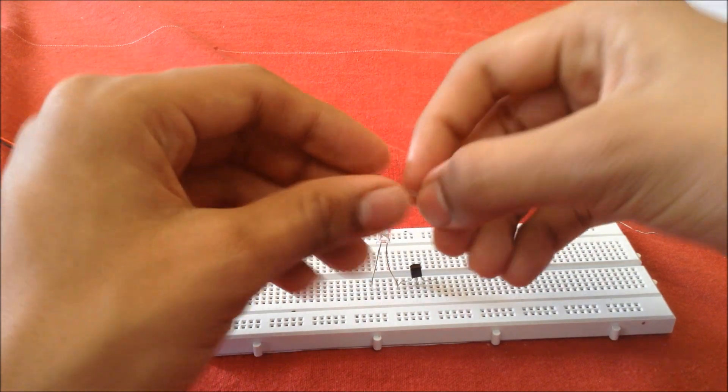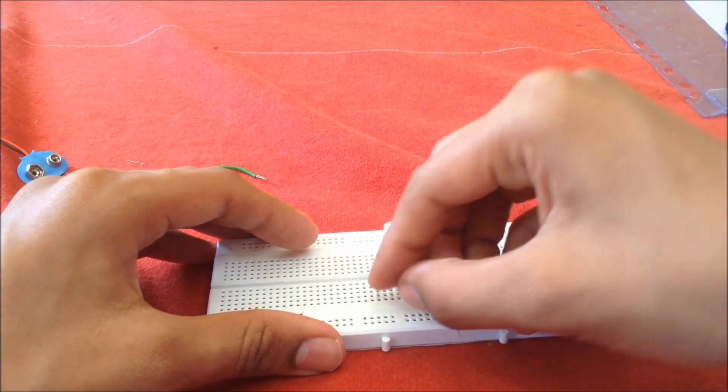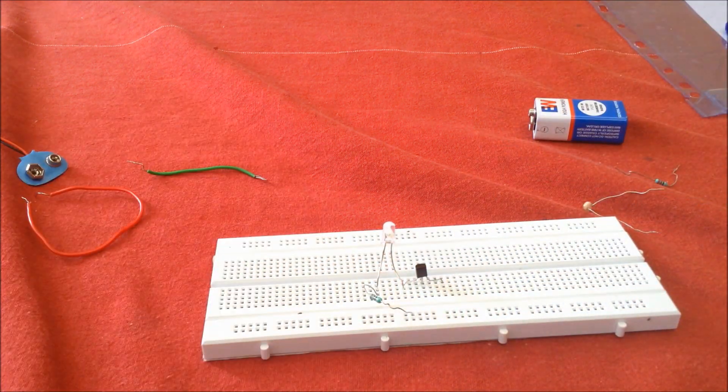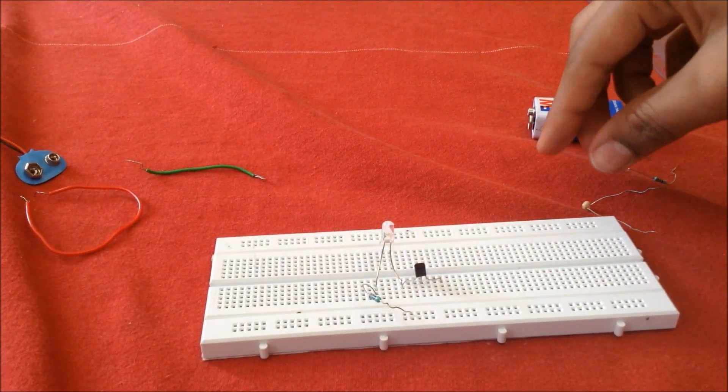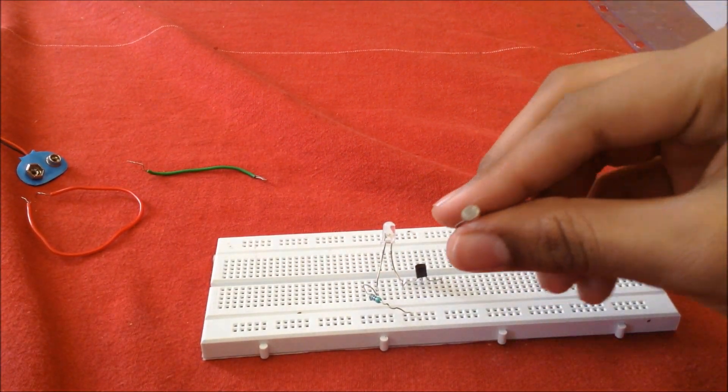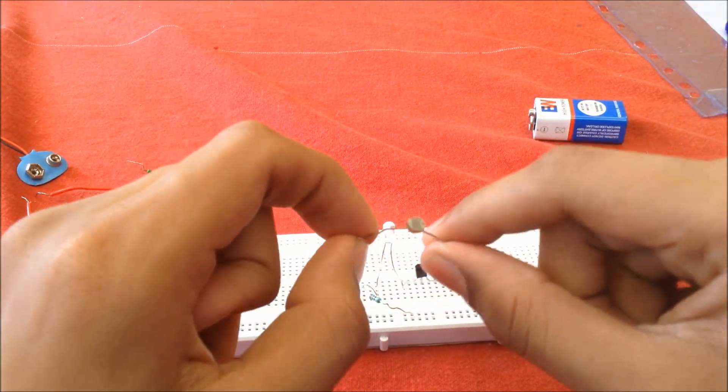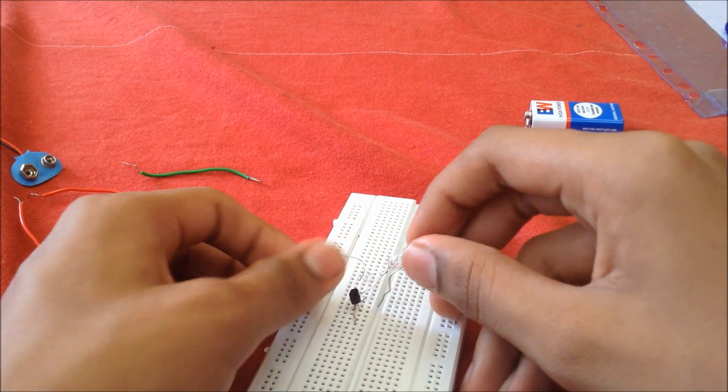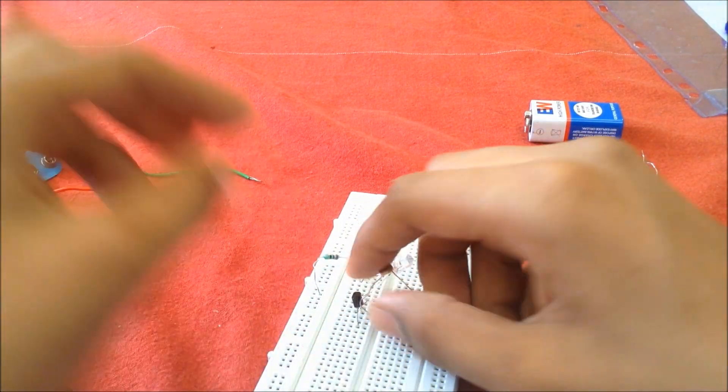We attach this to the cathode of the LED. Now we finally move on to the LDR. This will sense the presence of light, so we attach this to the center of the transistor - the middle-most leg.